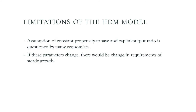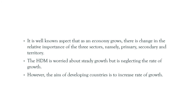The Harrod-Domar model assumes constant propensity to save and constant capital output ratio, which has been questioned by many economists. If these parameters change, there will be a change in the requirements for steady growth rate. This constancy in all these factors is considered very unrealistic in today's world. Furthermore, the Harrod-Domar model concentrates on the steady growth rate but neglects the rate of growth, whereas the aim of developing countries is to increase the rate of growth.